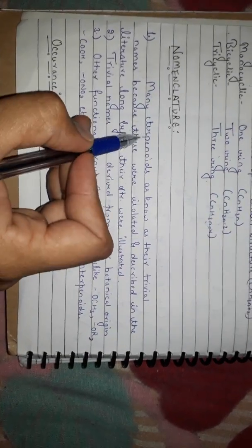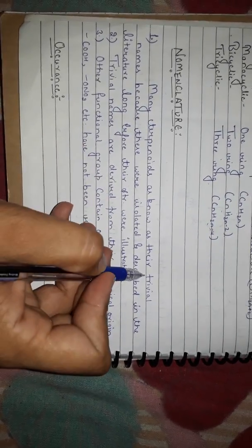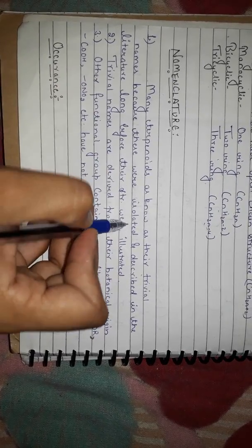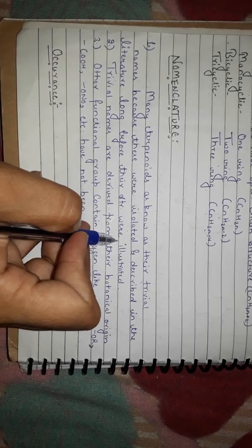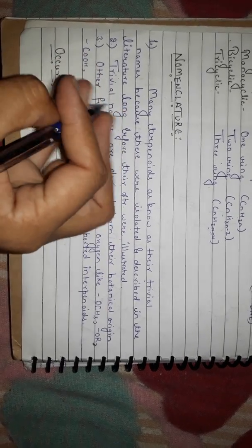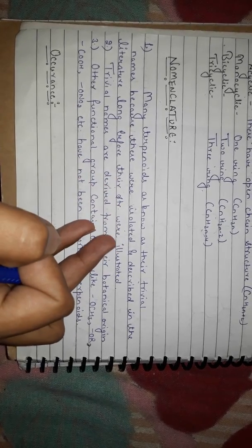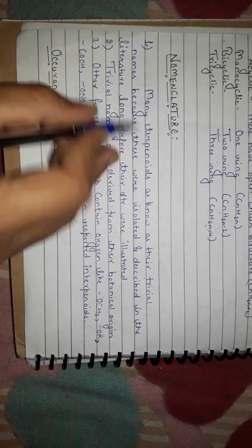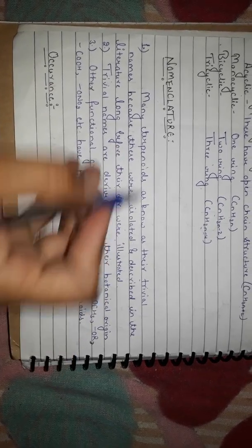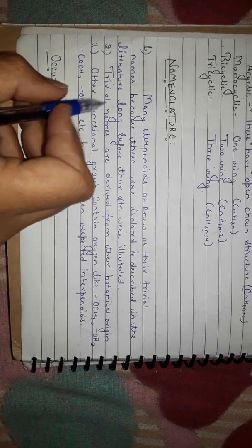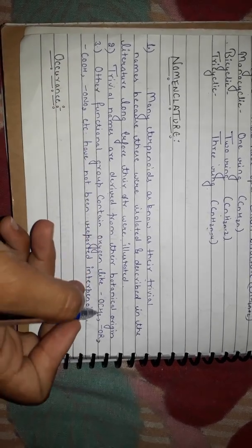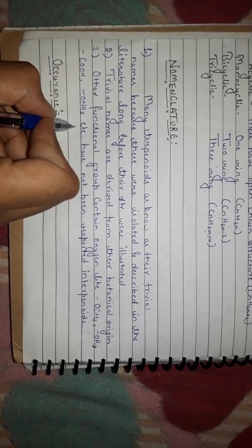Nomenclature of terpenoids: generally, terpenes are known by their trivial names because they were isolated and described in the literature long before their structures were fully illustrated. These trivial names are derived from their botanical origin. Functional groups such as -OH, -COOH, and -NO2 have not been reported in terpenoids.